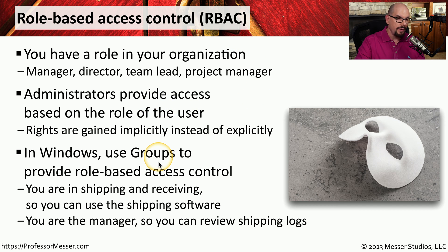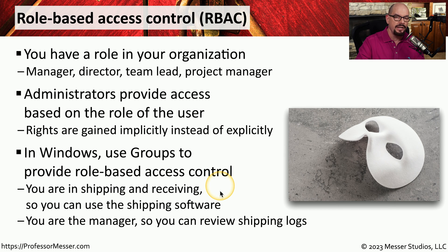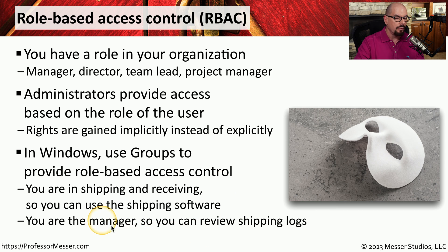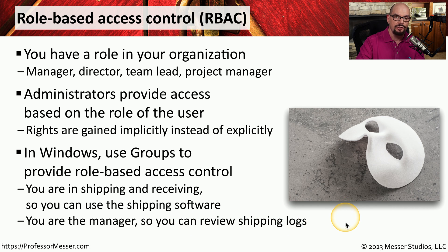In Windows, this is referred to as groups, and you can associate a role-based access control to each group. For example, you might have a group for shipping and receiving, and you can associate rights and permissions to the shipping software for anyone in that group. You might also have a group for managers of shipping and receiving, and managers might have additional access that allows them to view the shipping logs.